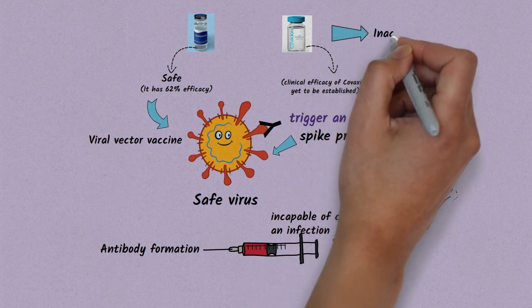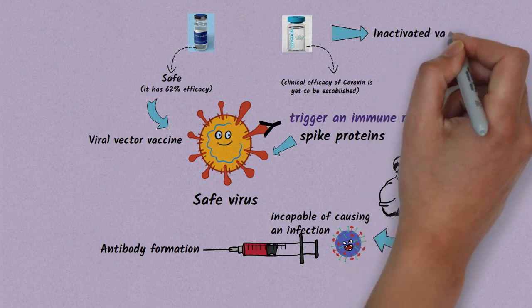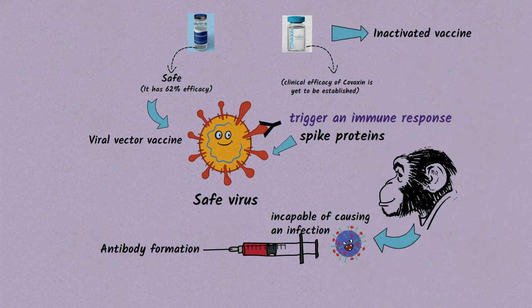On the other hand, Bharat Biotech's Covaxin is an inactivated vaccine. As part of the process, the disease-carrying virus - in the case of COVID-19 it is SARS-CoV-2 - is inactivated or killed and then injected.